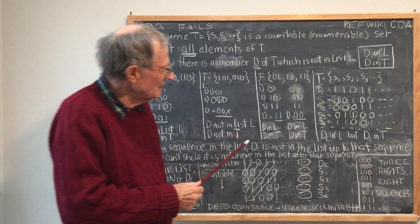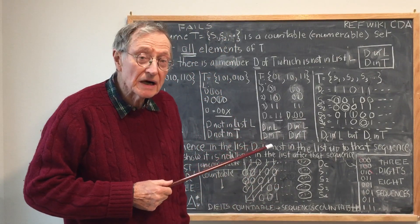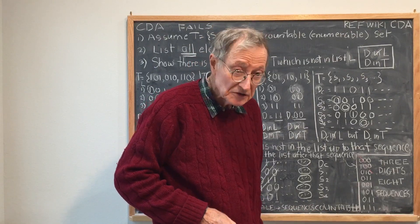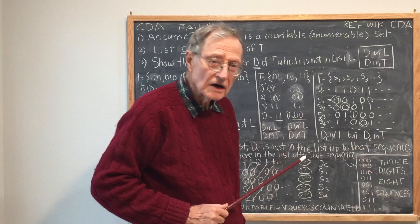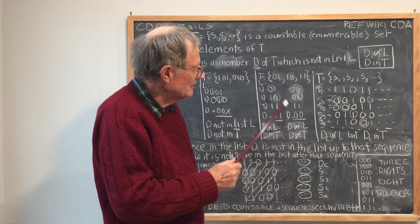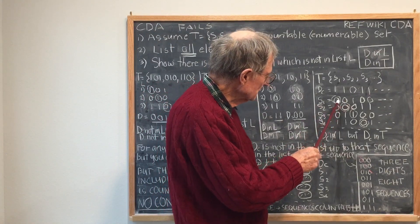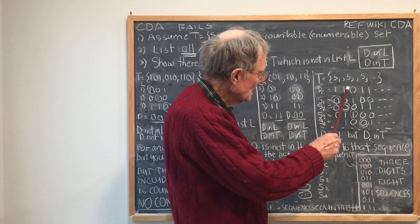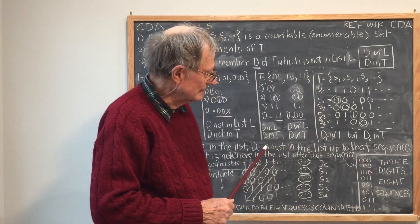What happens in Cantor's diagonal argument is T is assumed to be the set of all infinite binary sequences, and the objective is to show that this set of all infinite binary sequences is uncountable. This is done by assuming that all of the members of this set T are countable. So I write S1, S2, S3, S4, and so on. Then I construct the diagonal sequence D in the same manner where the first digit of S1 is changed in D, the second digit of S2 is changed, and so on. The argument is that I've constructed a D which is nowhere in the list, so I've satisfied this condition.